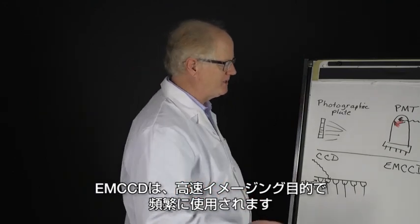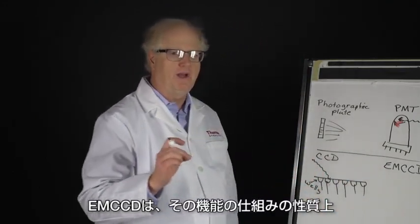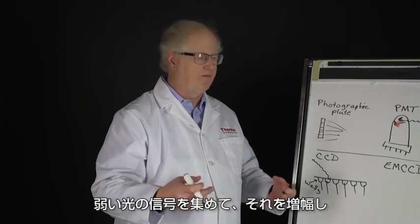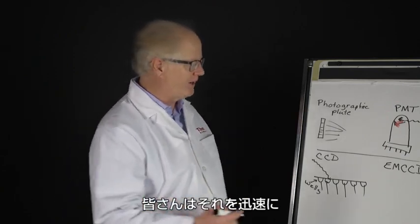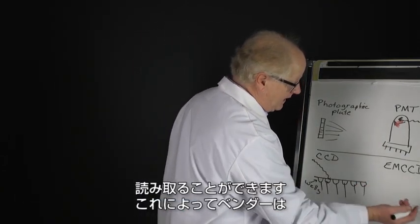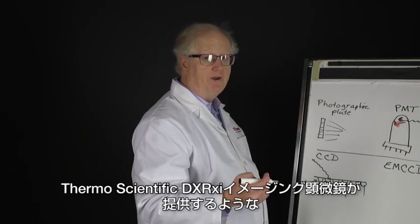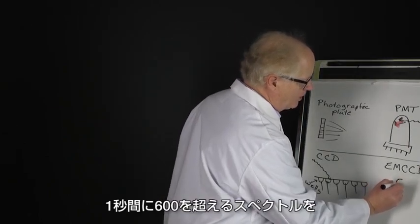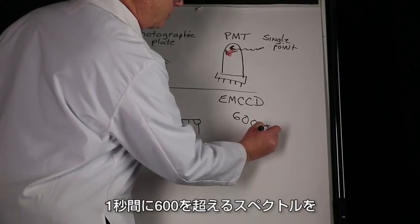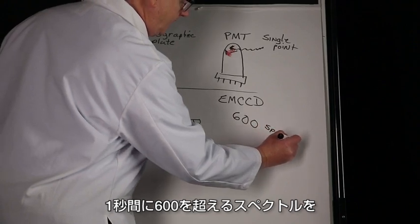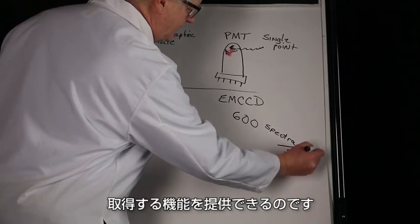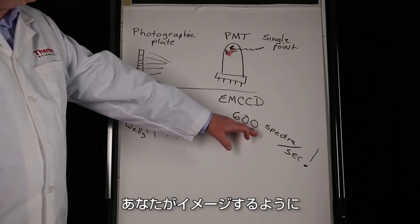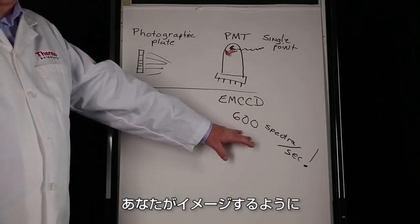The EMCCD, by the nature of the way it works, is able to collect that low light signal, amplify it, and then you can read it very quickly, allowing vendors to provide, as we do with our Thermo Scientific DXR XI imaging microscope, upwards of 600 or more spectra in one second. That's the key for the EMCCD.